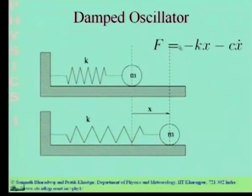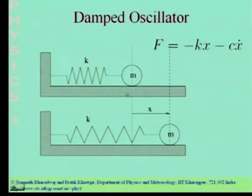We were discussing the damped oscillator in the last class and had taken up the under-damped oscillator. Let us revise what we had done and take up a problem first, then go ahead to discussing the over-damped and the critically damped oscillators. The damped oscillator we are considering is shown here — we have the good old spring-mass system.